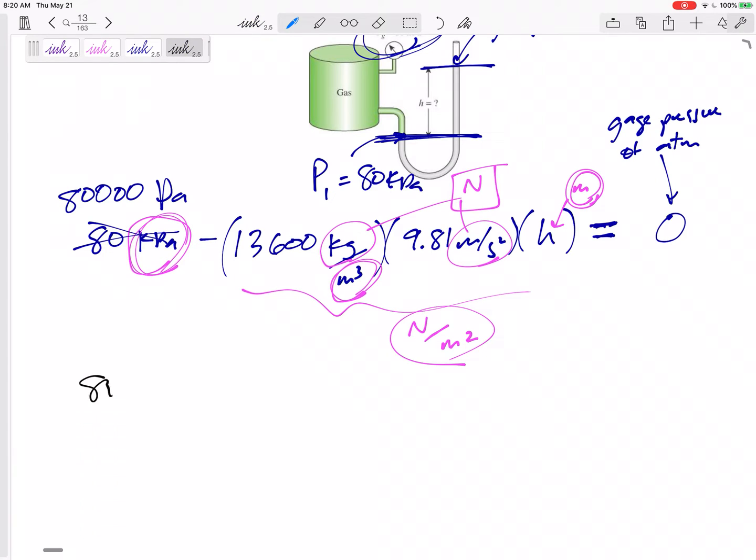So let me change this to 80 thousand Pa. Let me do the math: 80,000 minus 13,600 times 9.81 times h equals zero. Solve for h: h equals 0.60 meters.